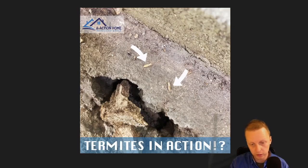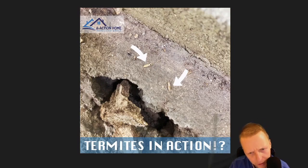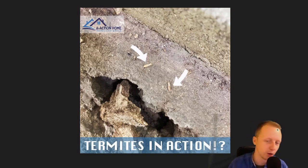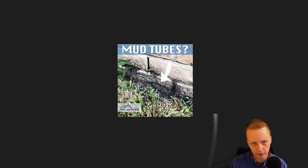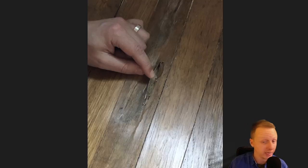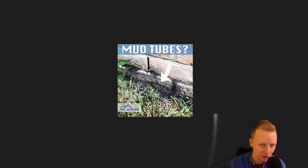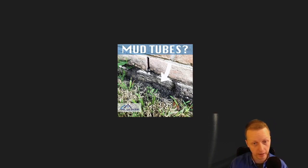This is what a termite soldier looks like. The workers are also visible here, though the image is a little blurry — those are workers. Moving on, mud tubes can look in any shape, size, and color. These ones here are a little older — you can see how thick and big they are. These are older termite tubes.